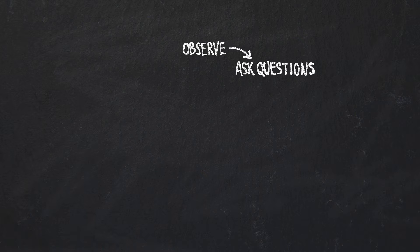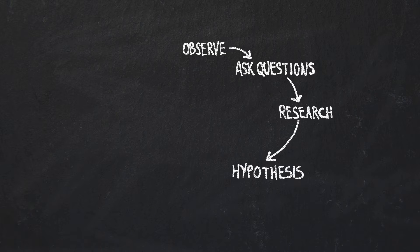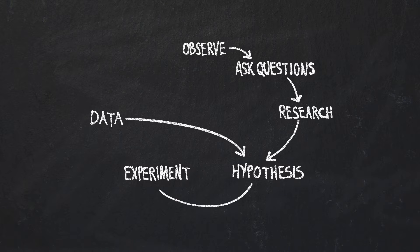We enter this process by observing the world around us. Based on our observations, we begin to ask questions. Based on these questions, we do some background research and we start to formulate our own testable hypothesis. We design experiments that then test the hypothesis. And then we let the data from those experiments determine whether or not the hypothesis is correct, whether it needs refinement, or it's incorrect and it should be refuted altogether.